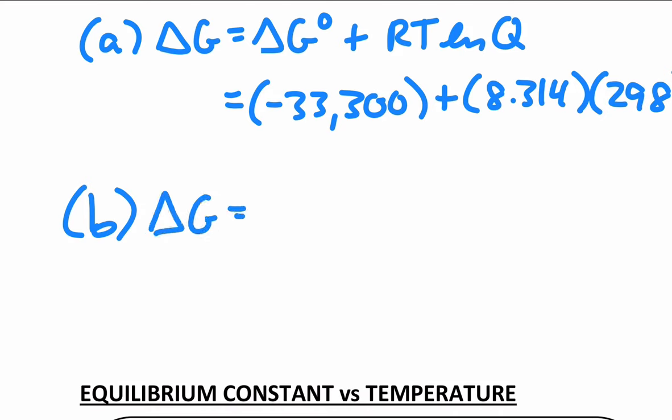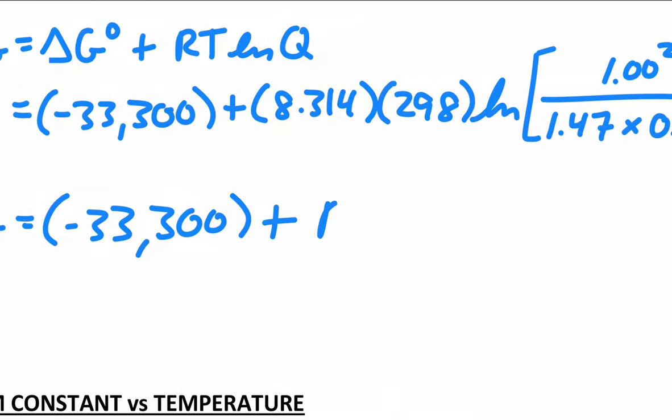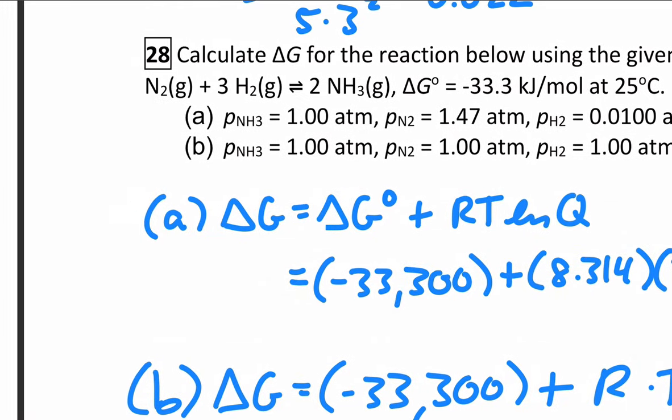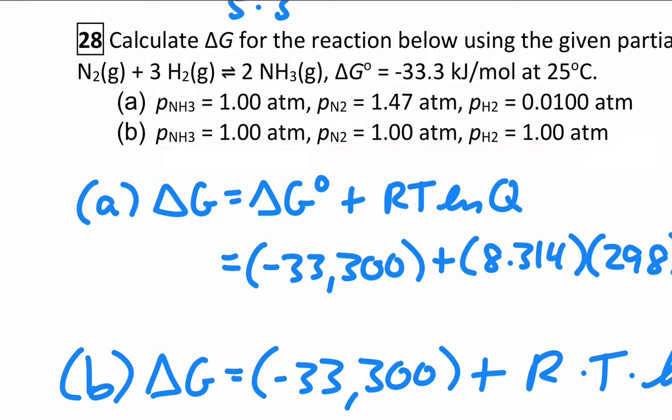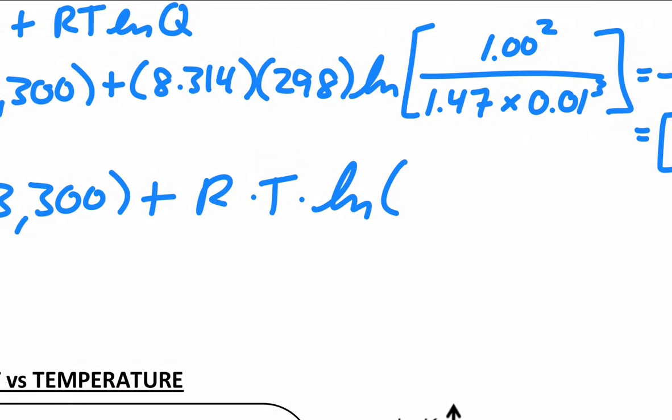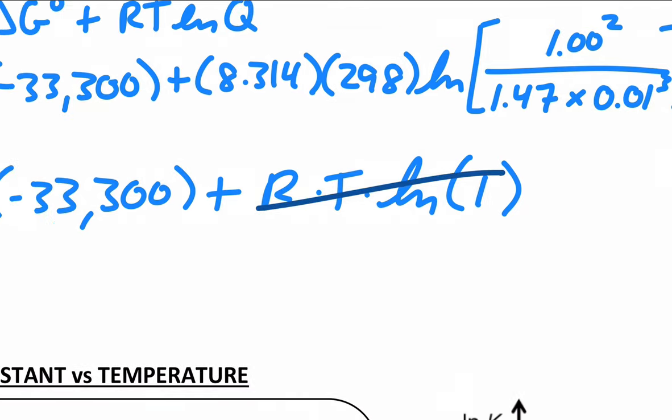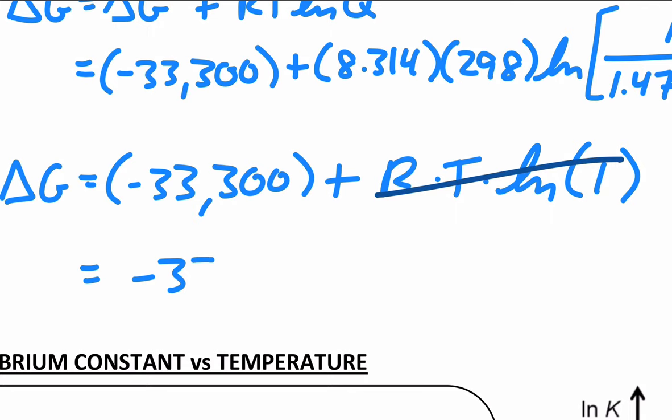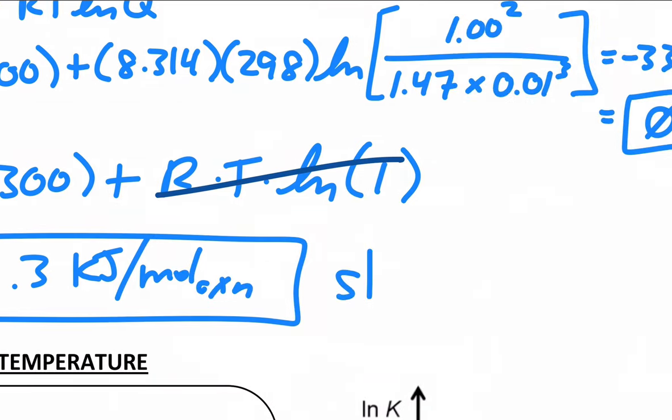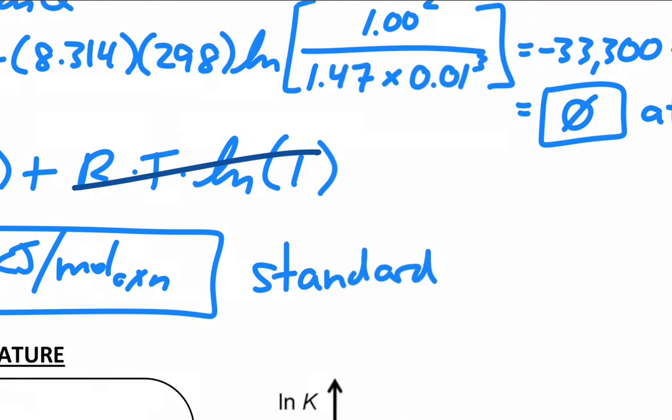For part B, delta G is the same expression, same standard conditions, negative 33,300, plus it's R times T times the natural log of, well, part B, everything is 1. So the reaction quotient is just 1. And remember the natural log of 1 is 0. So this whole second term gets cancelled, and delta G is just delta G standard, negative 33.3 kilojoules per molar reaction, which this is the standard state. So we didn't even have to write that out if we didn't want to.